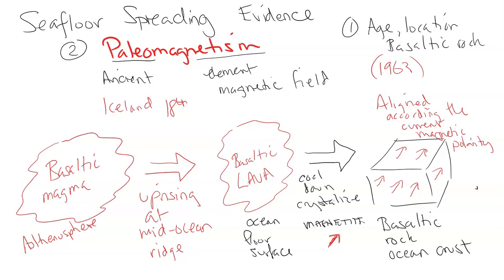You might expect the ocean floor to show continuously uniform polarity as indicated by the magnetite in the basaltic rock, but it wasn't uniform — and you can tune into the next video to see the effects and outcome of this research. Please subscribe, and videos will also be uploaded showing how to present this material to students through different activities and methods.